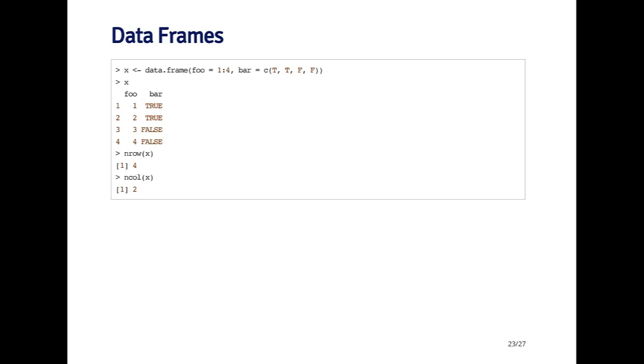When I call the nrow function on x, I see that there's four rows, and the ncol function shows me that there's two columns.